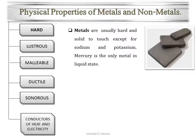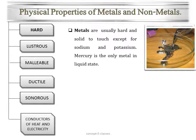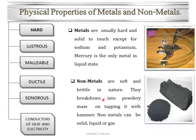The first property is hardness. Metals are usually hard and solid to touch, except for sodium and potassium. Mercury is the only metal in liquid state. Sodium and potassium are exceptions where we could cut them with the help of a knife — they are very soft in nature. Mercury is the only metal found in liquid state at room temperature. Nonmetals are soft and brittle in nature; that is, they break down into powdery mass on tapping with a hammer.